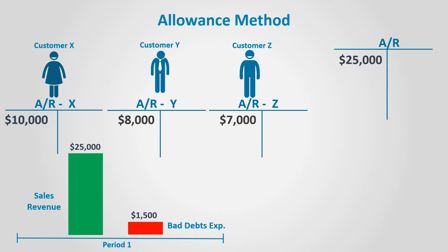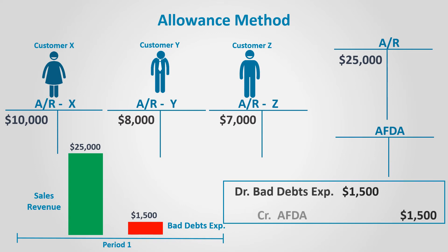The problem is: how do we deduct such an expense without reducing any of the accounts receivable accounts in the subsidiary ledger? We need to know how much each customer owes, and at the same time we don't want to report the whole accounts receivable balance while we know that a portion of it might be uncollected. The solution is to create a contra account — that is, against the asset — whose normal balance is credit. This contra account is deducted from the asset account, which is accounts receivable, and is called Allowance for Doubtful Accounts, or AFDA for short. It is credited and bad debts expense is debited by $1,500.